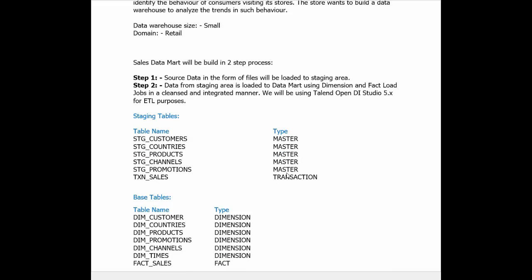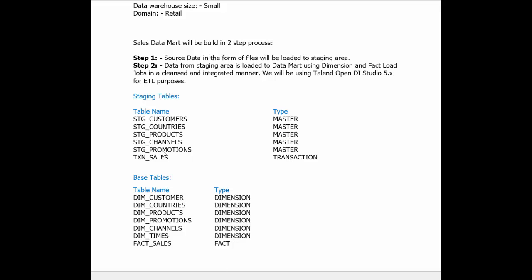We are going to receive six different types of data. Among these, five will be our master data, which will be loaded to our staging tables. All of these tables follow a standard naming convention: stg underscore table name. Our transaction data coming from an OLTP system will be stored in an as-is fashion under the txn underscore sales table.